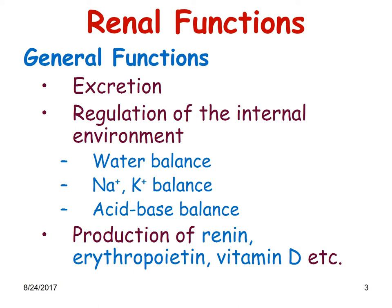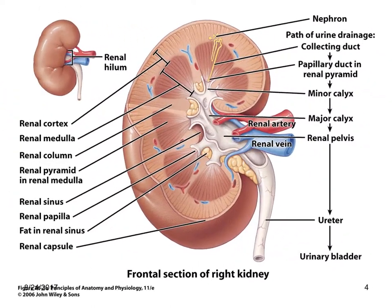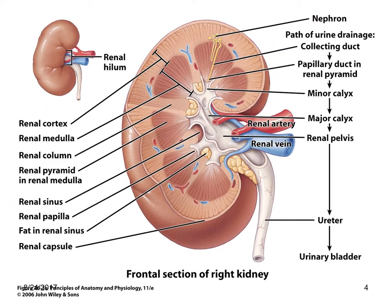This is a typical section cut from above downwards of the kidney — the frontal section of the right kidney. This shows that we have the renal cortex on the outside and the renal medulla on the inside. There are renal columns, renal pyramids in the renal medulla, renal sinus, renal papilla, and also the outer capsule which is called the renal capsule.